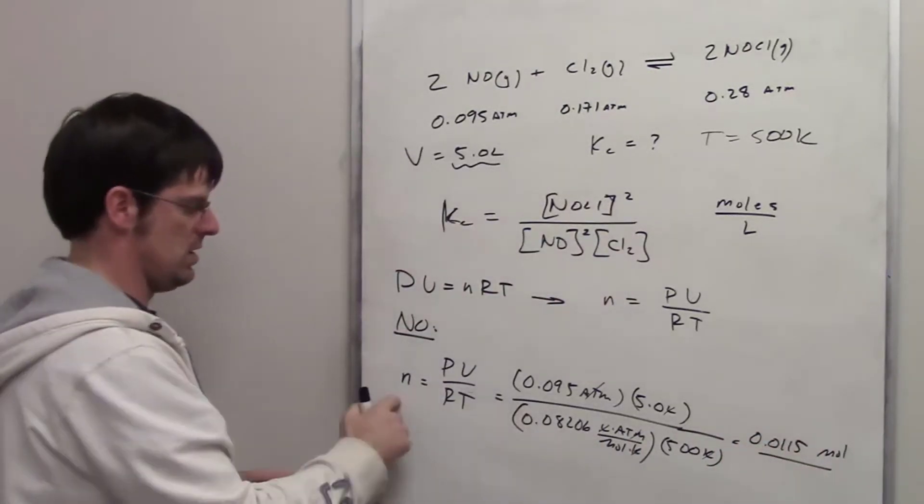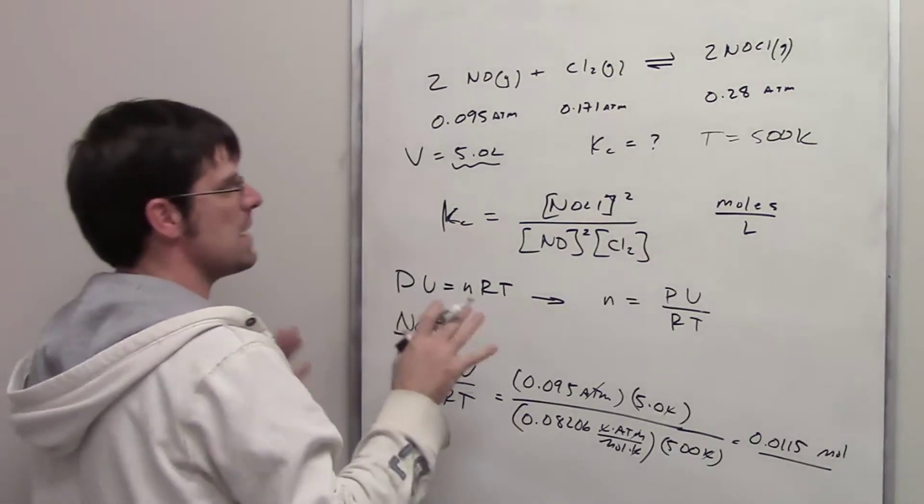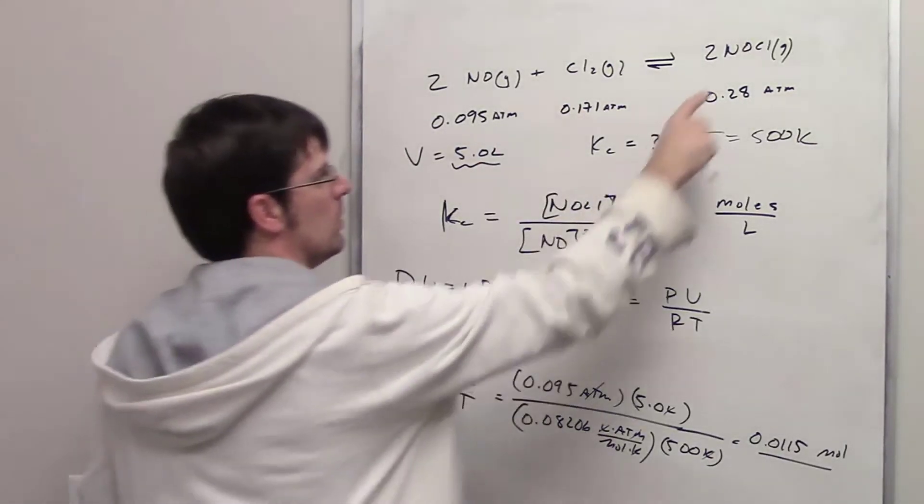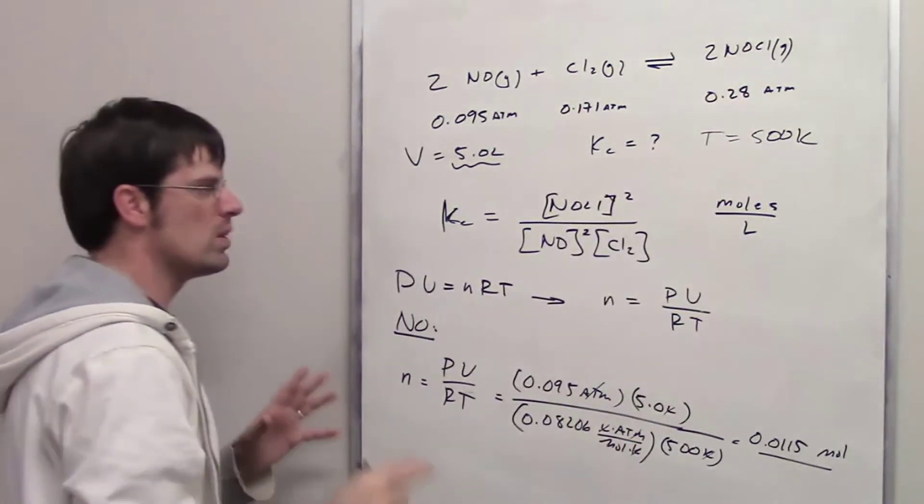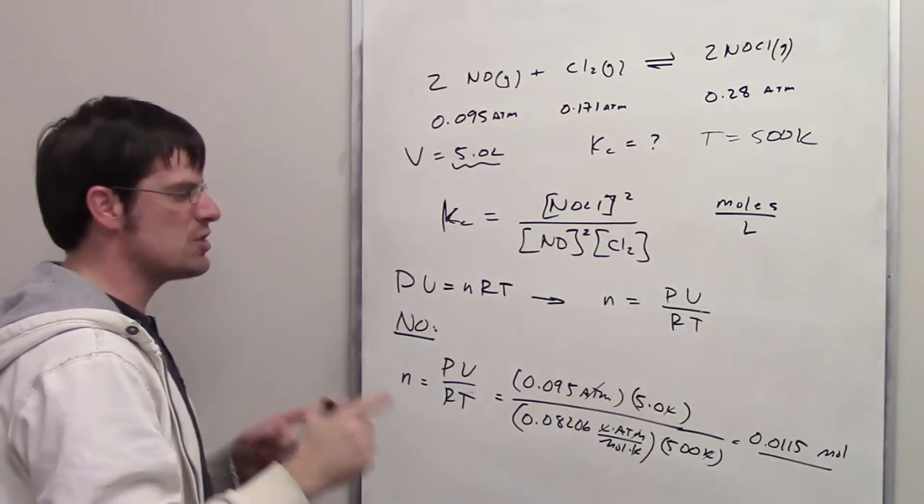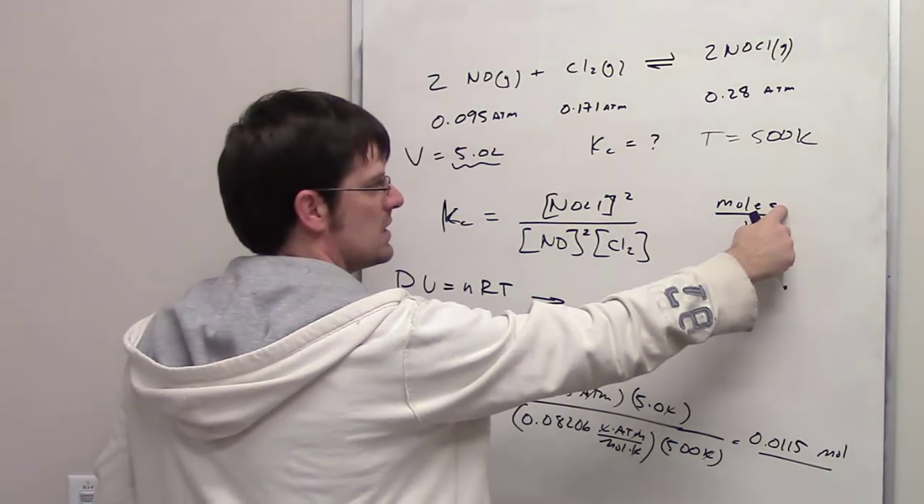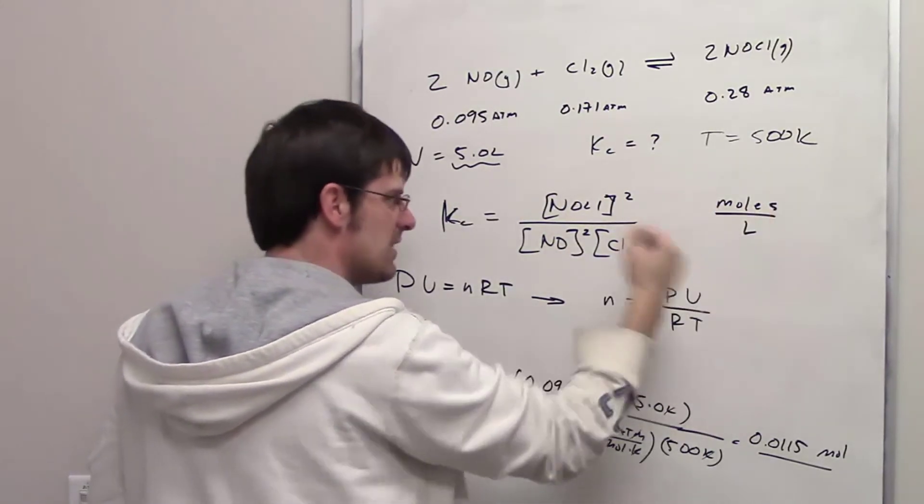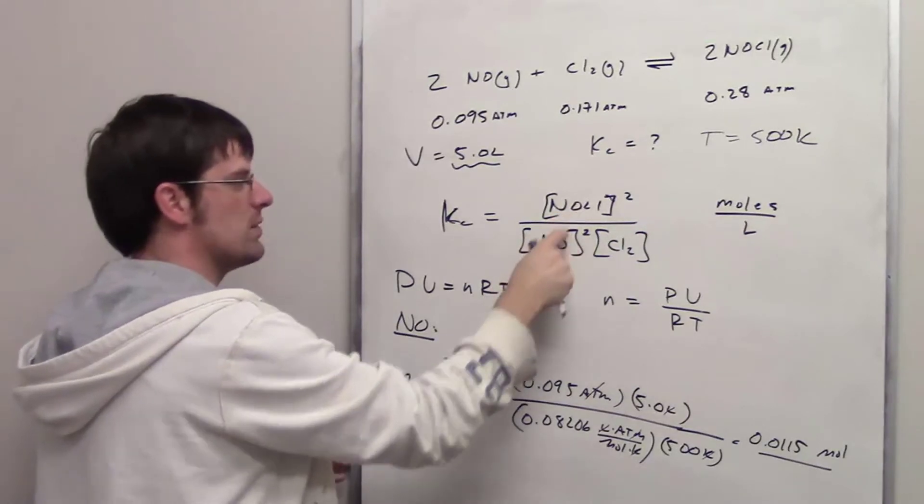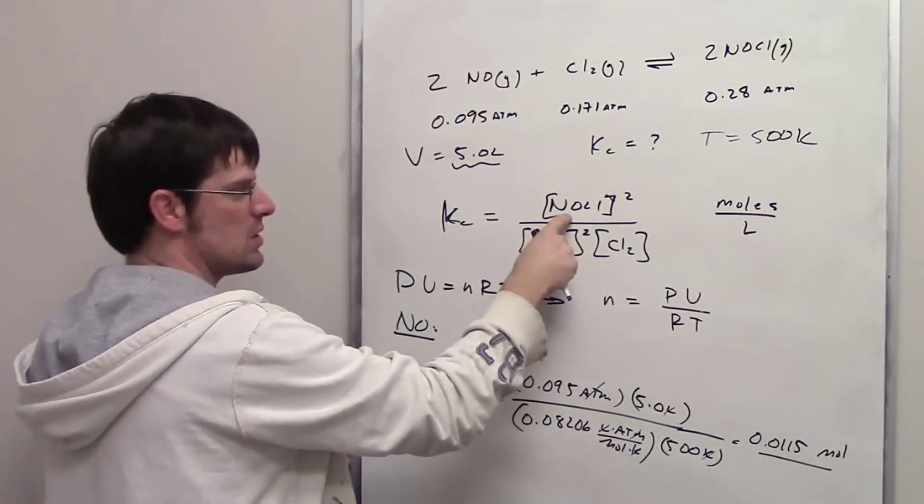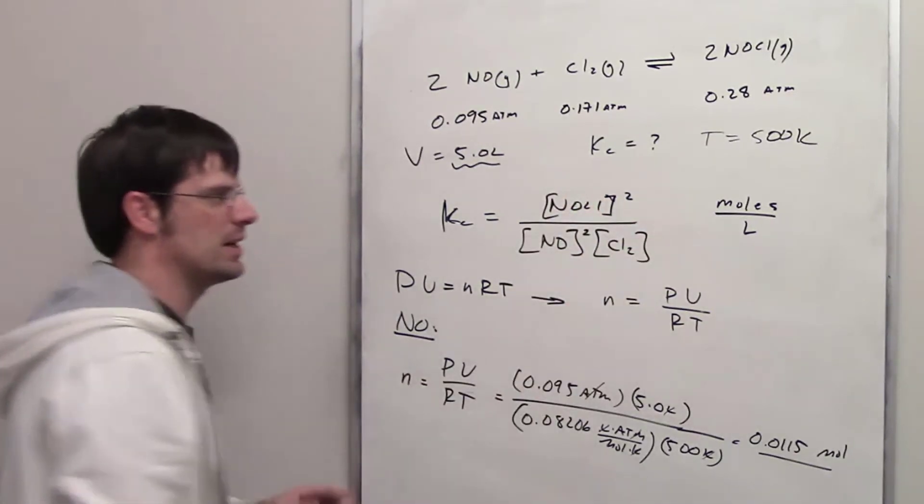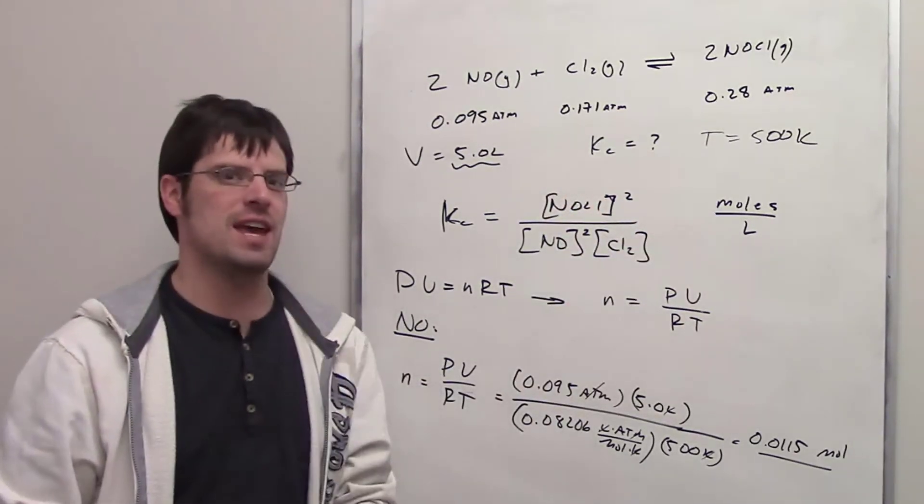That is the number of moles of NO. Now, I'm going to do the same thing to determine the moles of Cl2 and the moles of NOCl. Once I've done that, I take each number of those moles and I divide it by the volume of the vessel, 5 liters. And that gives me the concentration of each one of these respective substances. I then throw each of those concentrations in here and then plug it into my calculator and voila, I should have Kc.